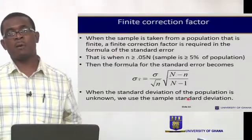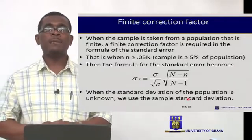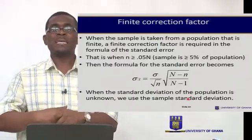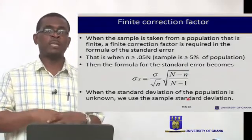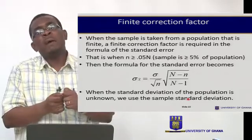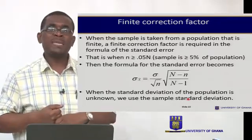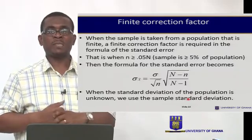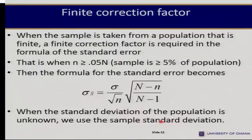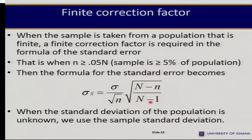The formula for the standard error we saw earlier is used when the sample is taken from a population that is infinite — in other words, the sample size is a minute fraction of the population. But where the sample size is 5% or more of the population, we correct the formula of the standard error by multiplying sigma over square root of n by the square root of (N minus n) over (N minus 1), where capital N is the population size and small n is the sample size.